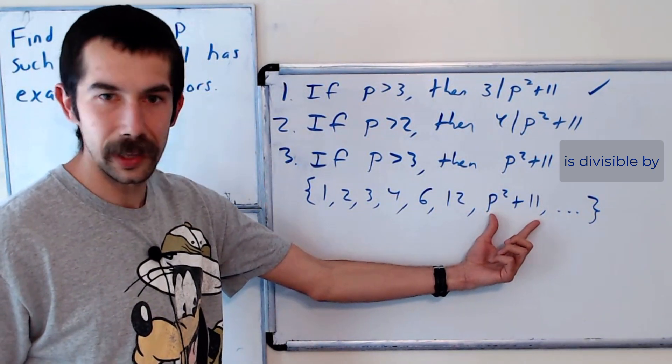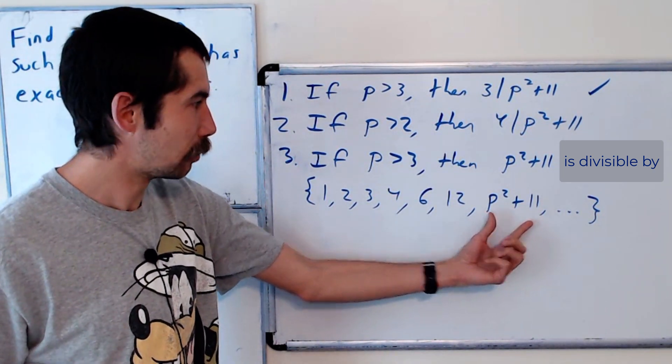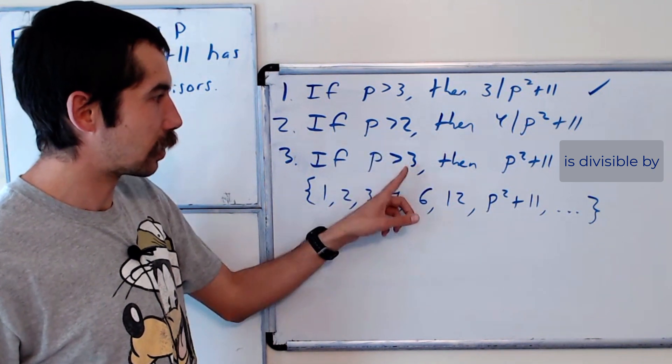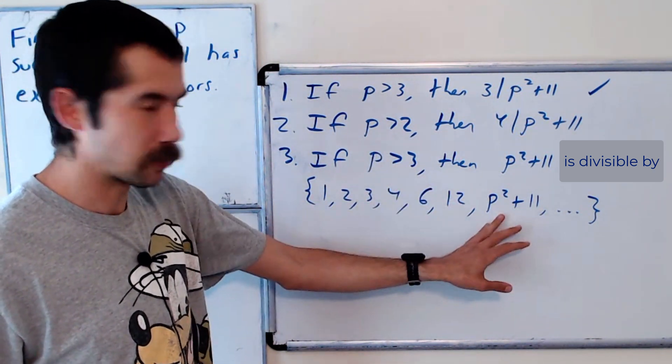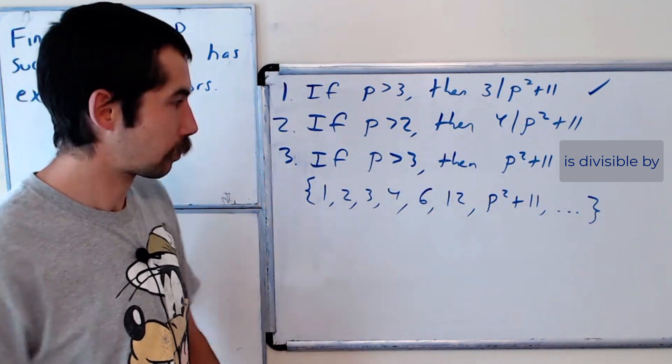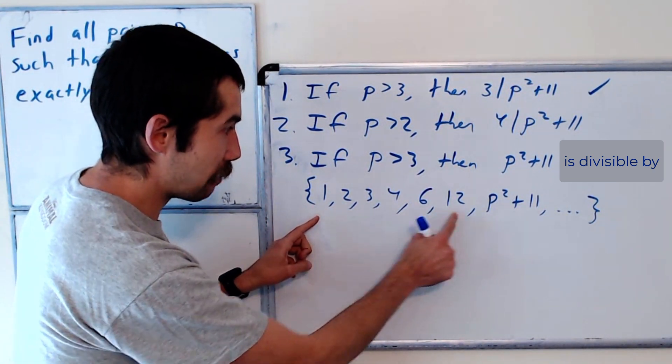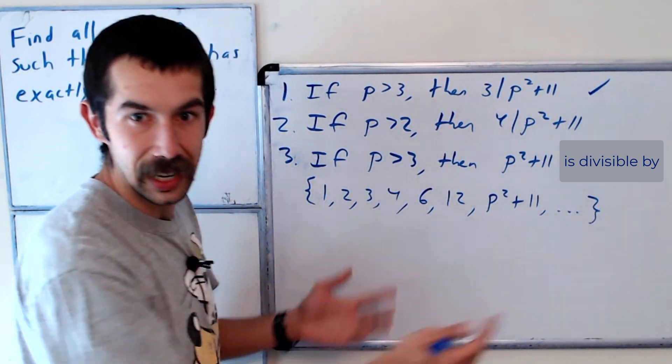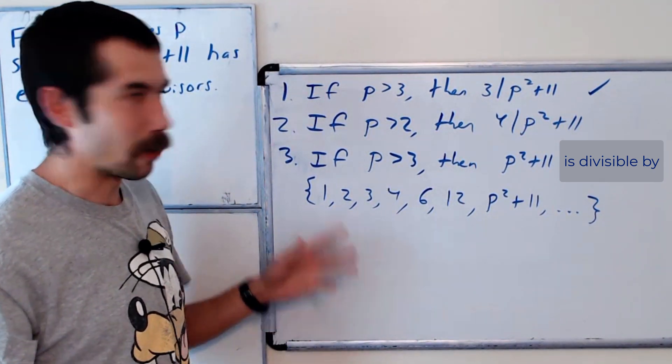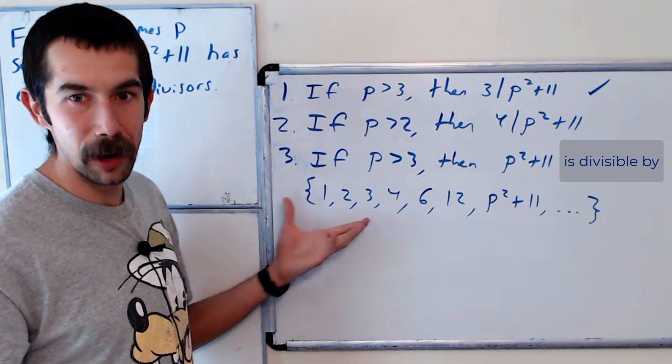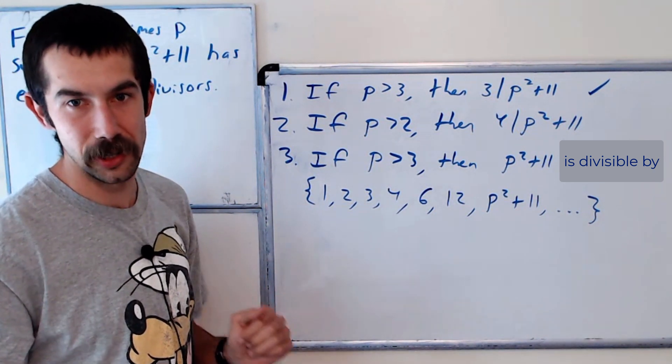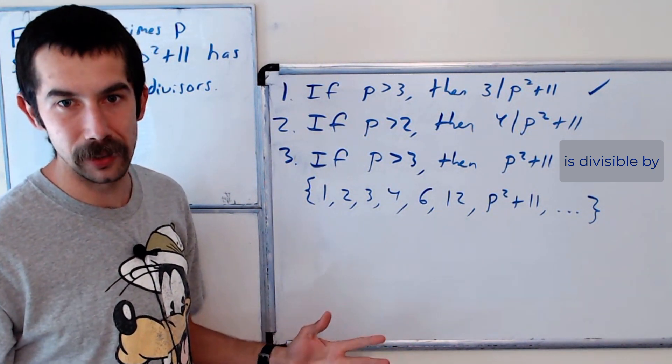Okay, and we should just check that p squared plus 11 is bigger than 12. But the smallest prime bigger than 3 is 5, and 5 squared plus 11 is definitely bigger than 12. Okay, and so let's check. There are 1, 2, 3, 4, 5, 6, 7, at least 7 elements in this set. So any prime that's bigger than 3 will have at least 7 divisors.